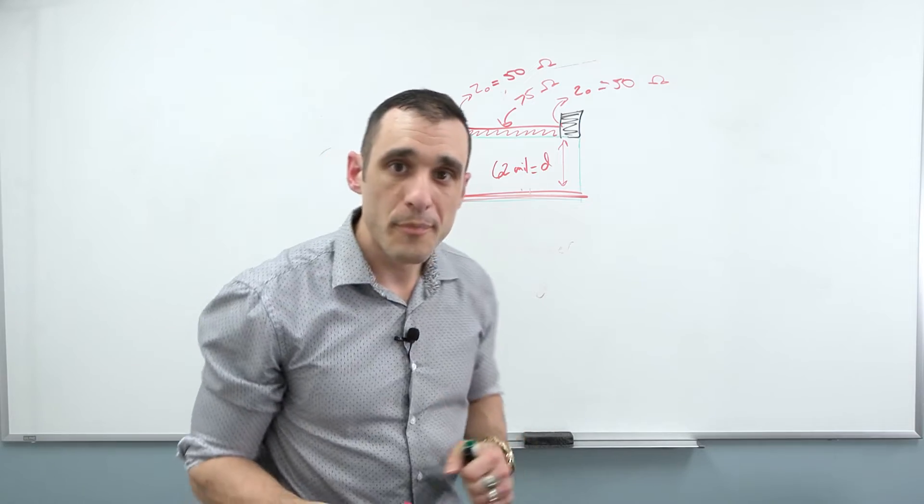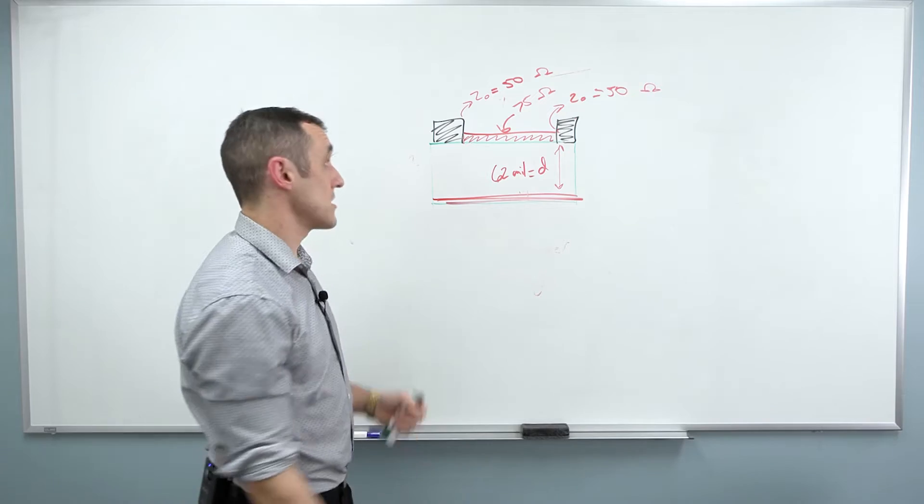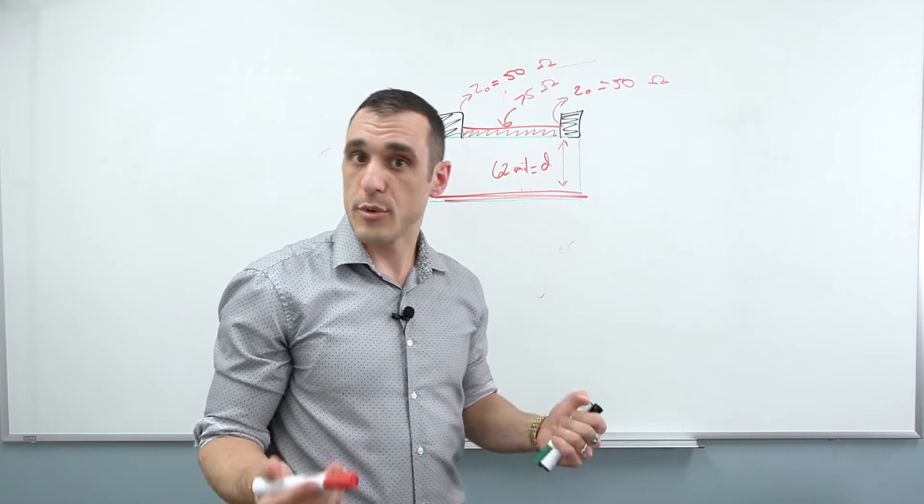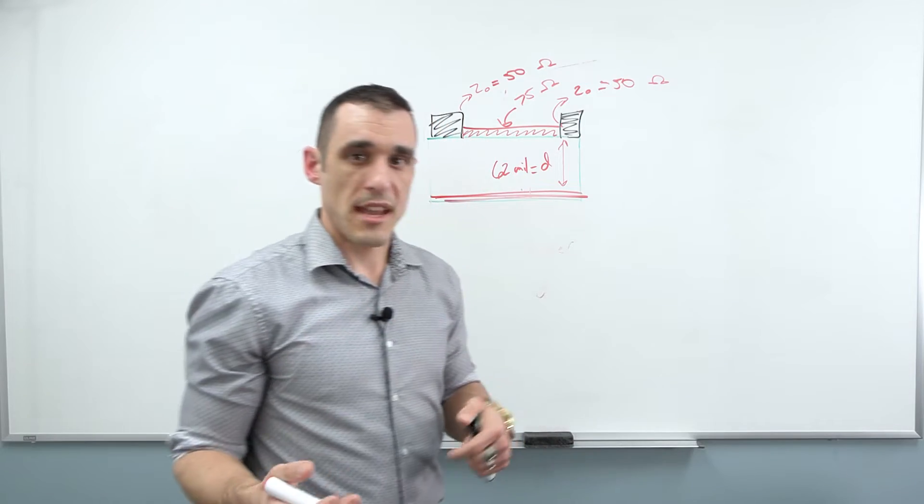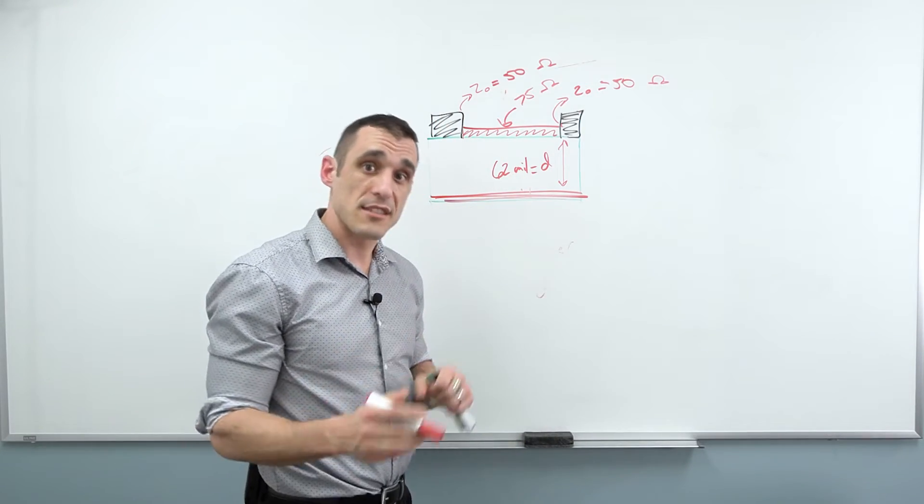What's one example? First example is USB 2.0. USB 2.0 can be done on a two-layer board, as long as the traces are short enough. If you look at an Arduino, like an Arduino Uno, that's a great example of one board where USB is used.